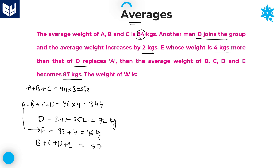What is the sum? 87 into 4. The sum of these 4 members is 87 into 4, which is equal to 320 plus 28, which is 348.